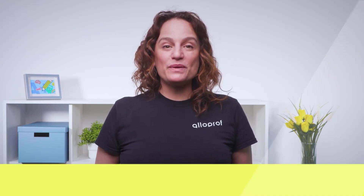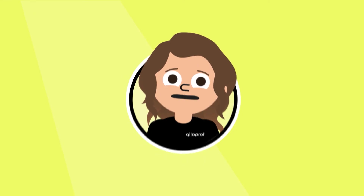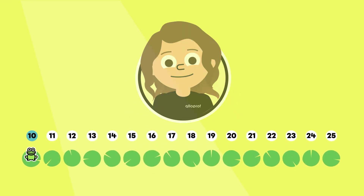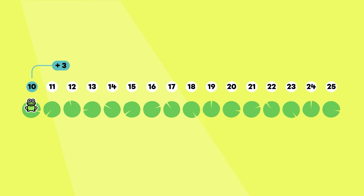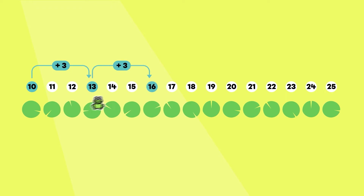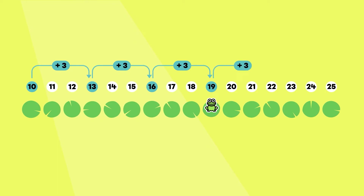Now, do you want to skip count by three in ascending order with me? Let's go! This time, the frog starts on ten. I start by adding three to ten. Ten plus three equals thirteen. I move the frog onto thirteen. I keep adding three to the new numbers. Thirteen plus three equals sixteen. The frog jumps onto sixteen. Sixteen plus three equals nineteen. Nineteen plus three equals twenty-two. And twenty-two plus three equals twenty-five.